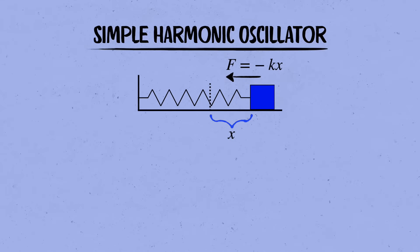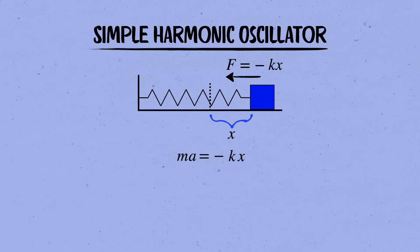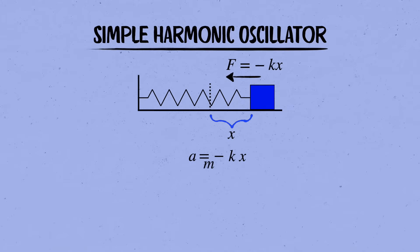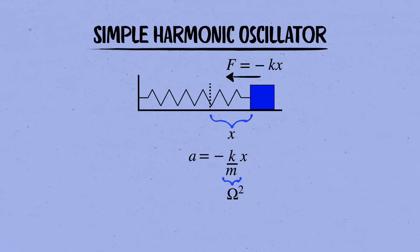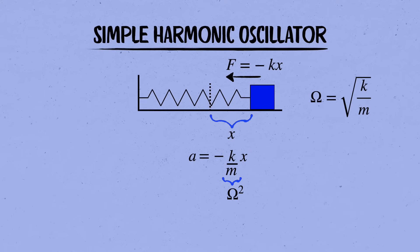The f equals ma equation for the block is ma equals minus kx. We can make this look a little neater by moving the m to the right hand side. And then it's also convenient to define a new symbol for the fraction k over m that shows up there. Call it omega squared, where omega is the square root of k over m. It'll be clear what that parameter means in a second.